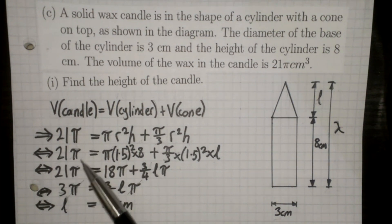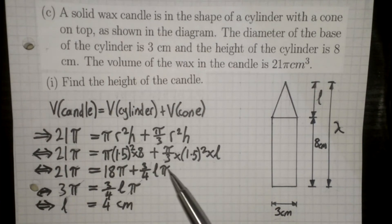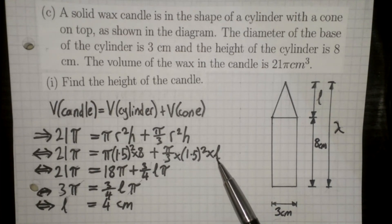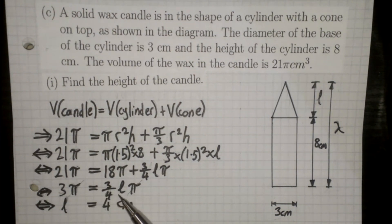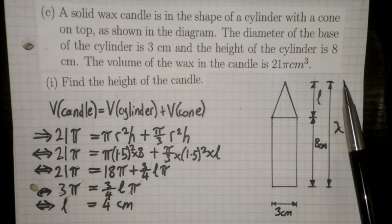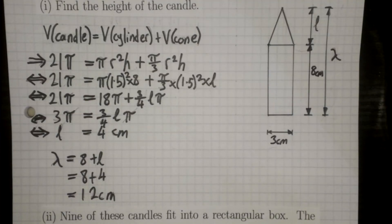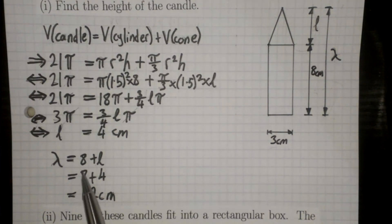Following through: 21π = π × 1.5² × 8 + (π/3) × 1.5² × L. Remember you're given diameter, not radius, so the radius is 1.5cm. Simplifying, you move 18π to the other side and get 3π = (3/4)Lπ, which means L = 4cm. That gives us the height of the cone. For the total candle height lambda, since the candle is made of the cylinder height 8cm plus the cone height L, lambda = 8 + 4 = 12cm.